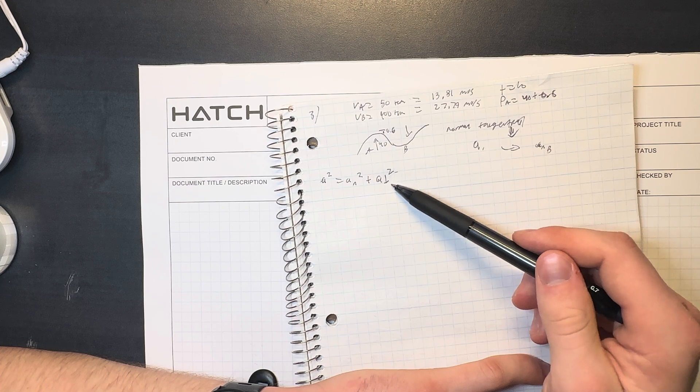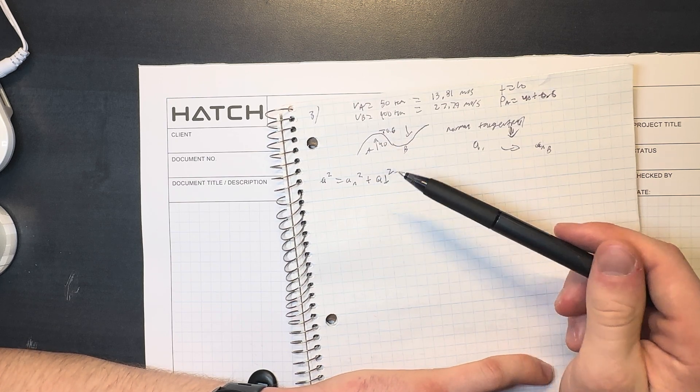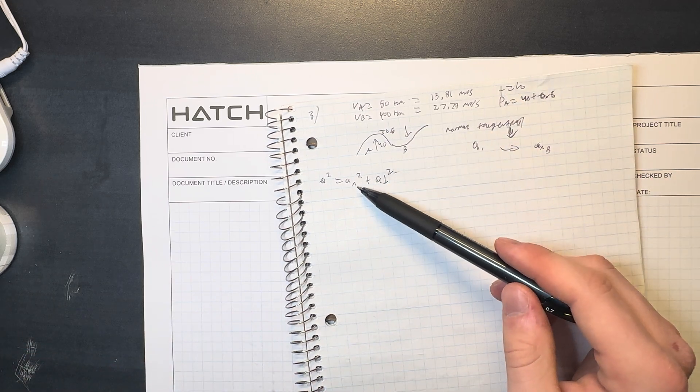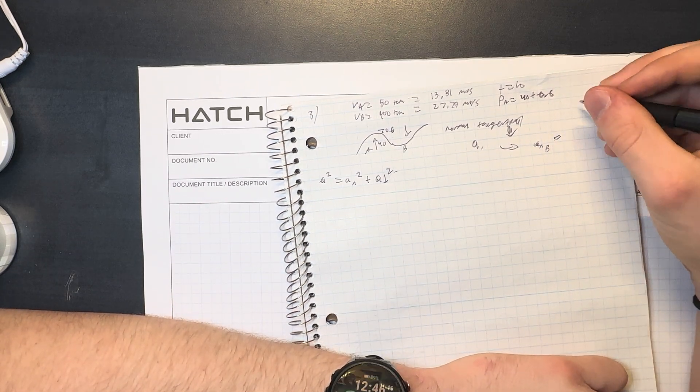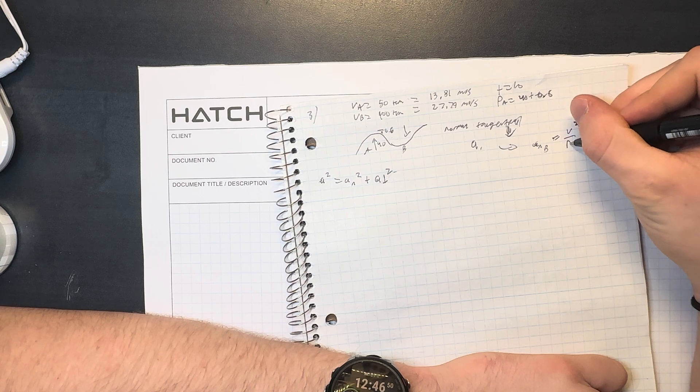Okay, so we're going to solve for this because we know that this is just the normal acceleration. It's the acceleration that we would get like constant acceleration. This has its own formula which is v squared over radius.